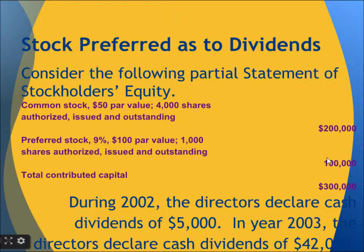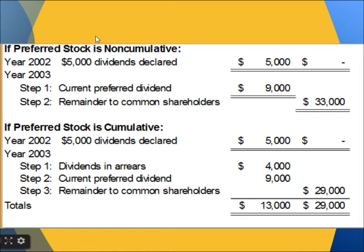Total preferred stock value is $100,000. 9% of $100,000 is $9,000. In 2002, directors declared a cash dividend of $5,000. Since $5,000 is less than $9,000, this entire amount will go to the preferred stockholders. In case of non-cumulative, the full $5,000 dividend declared goes to preferred stockholders.